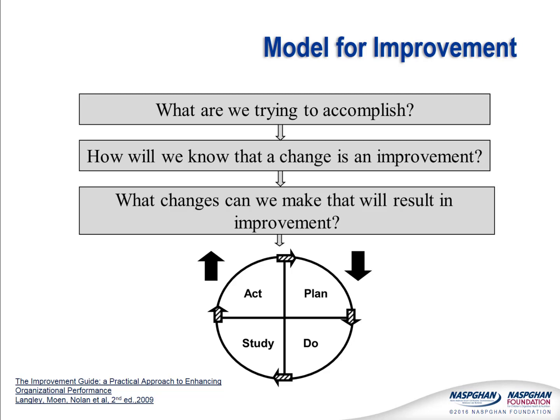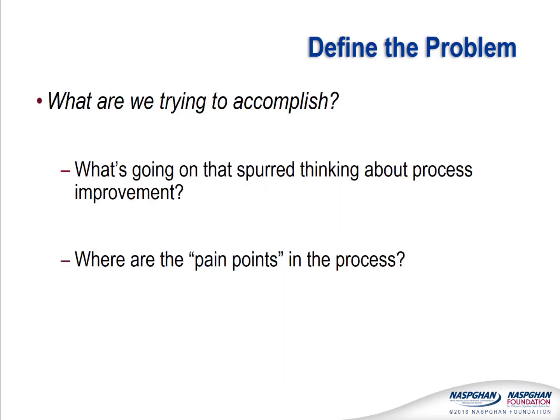The second principle is testing improvement ideas in a cyclical pattern that results in learning from each intervention. The first question in establishing a framework for improvement is to ask: what is it that we're trying to accomplish? This means that we must explore the background of why we are convened to work on the process — what's going wrong, what outcome is not where you want it to be, and what are the pain points that people are feeling, particularly the customer?